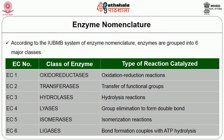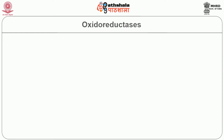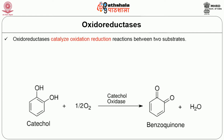EC4 are lyases, which involve group elimination to form a double bond or joining of molecules. EC5 are isomerases, responsible for isomerization reactions — the conversion of one isomeric form to another. EC6 are ligases, responsible for bond formation, usually coupled with ATP hydrolysis.